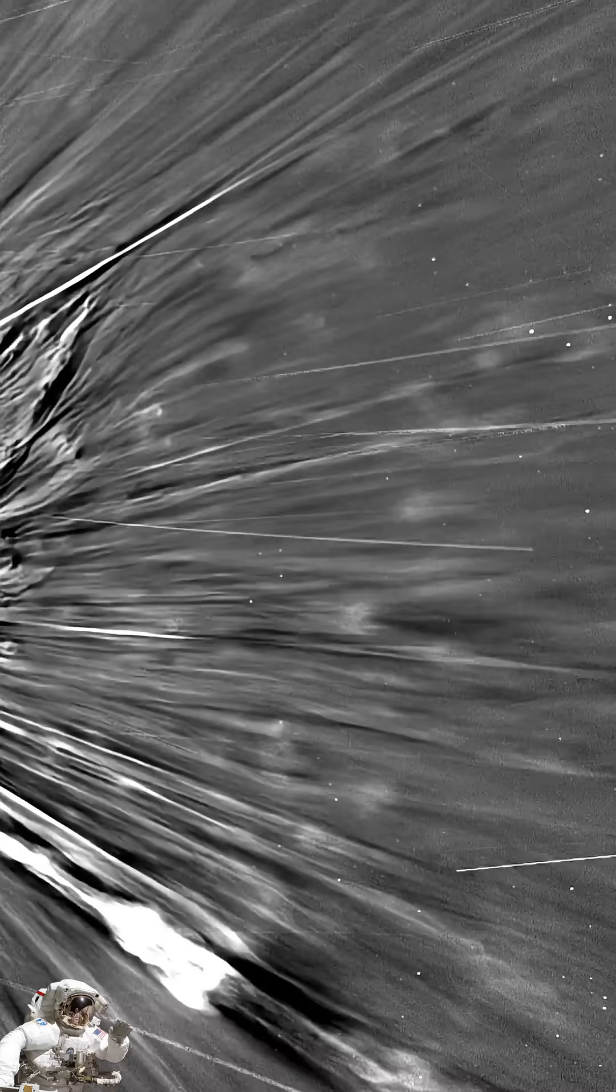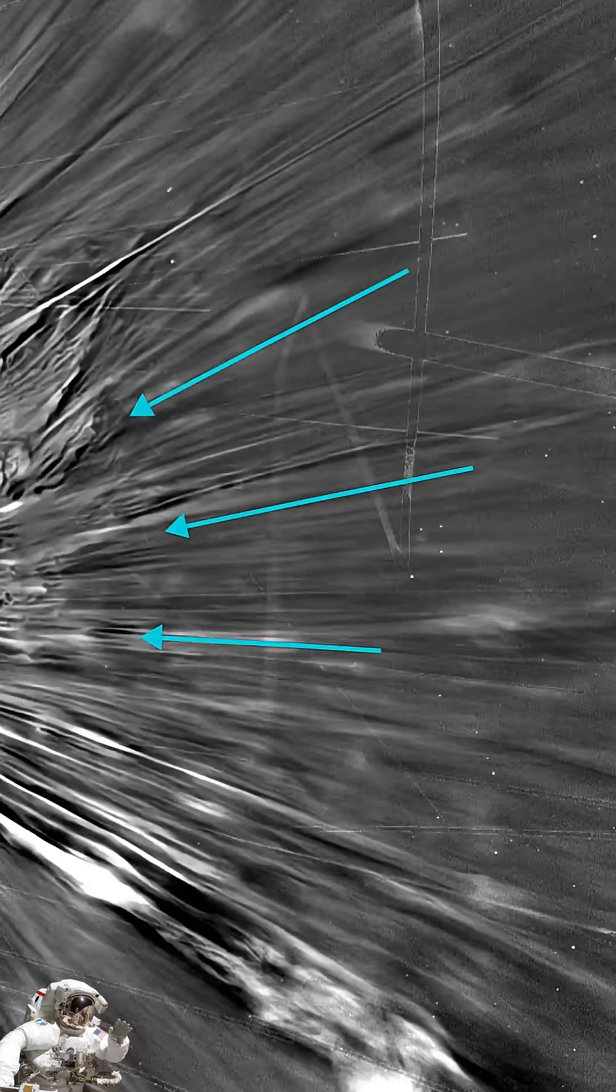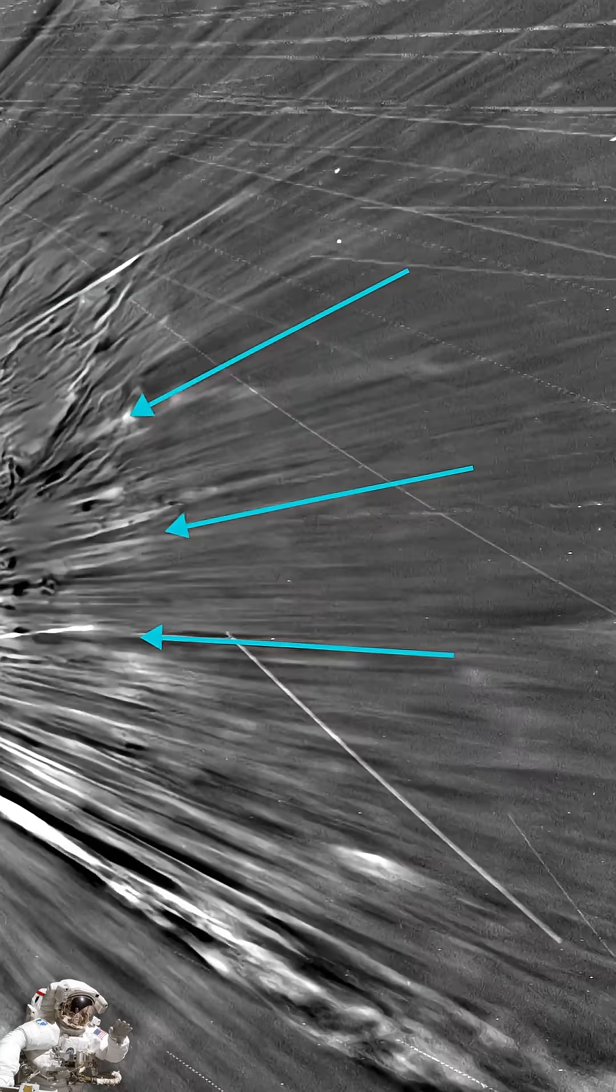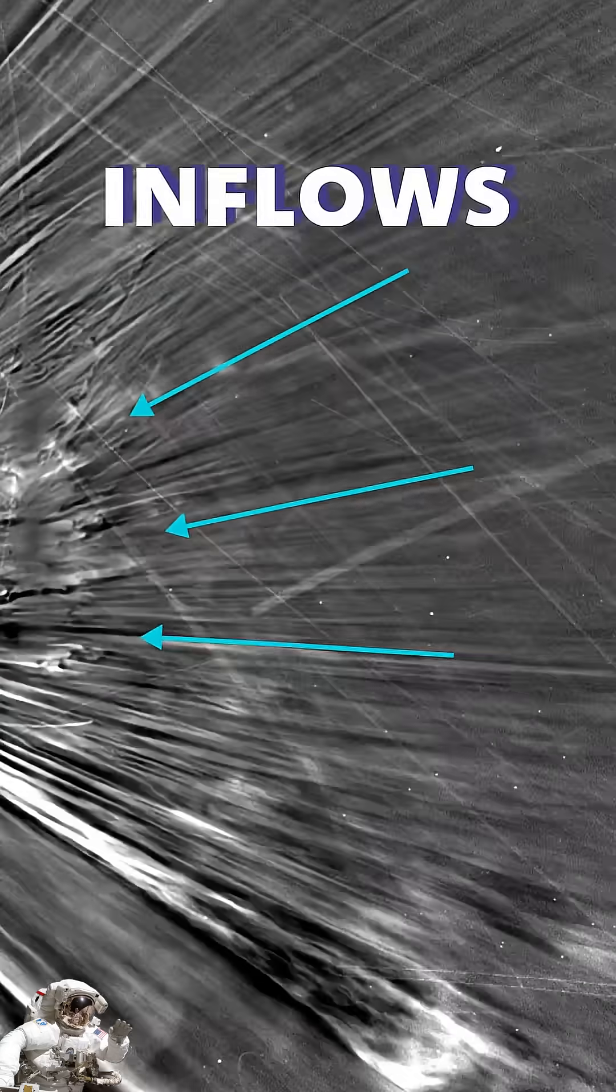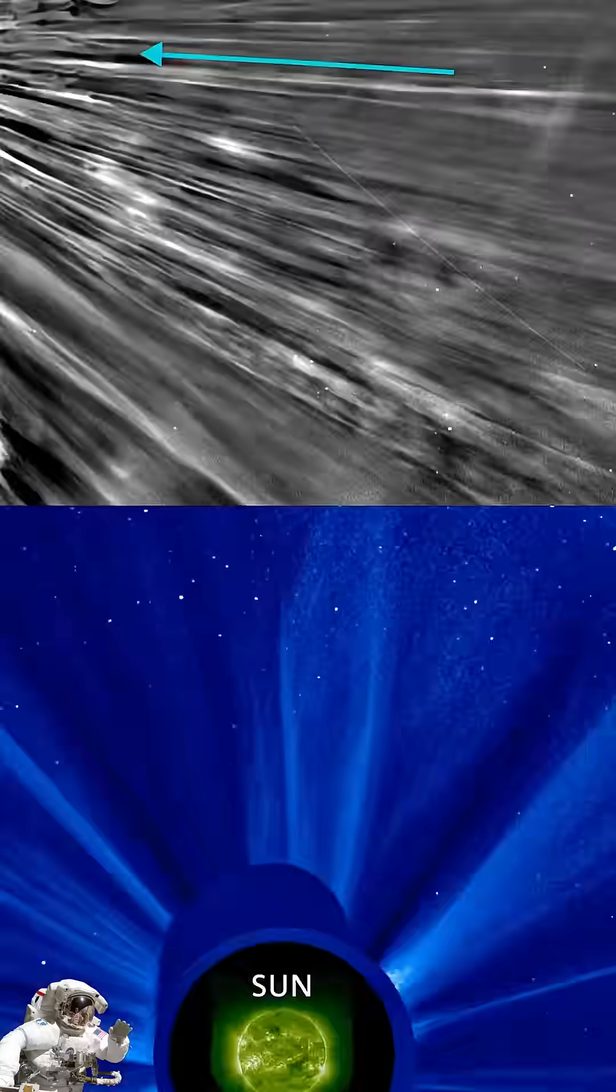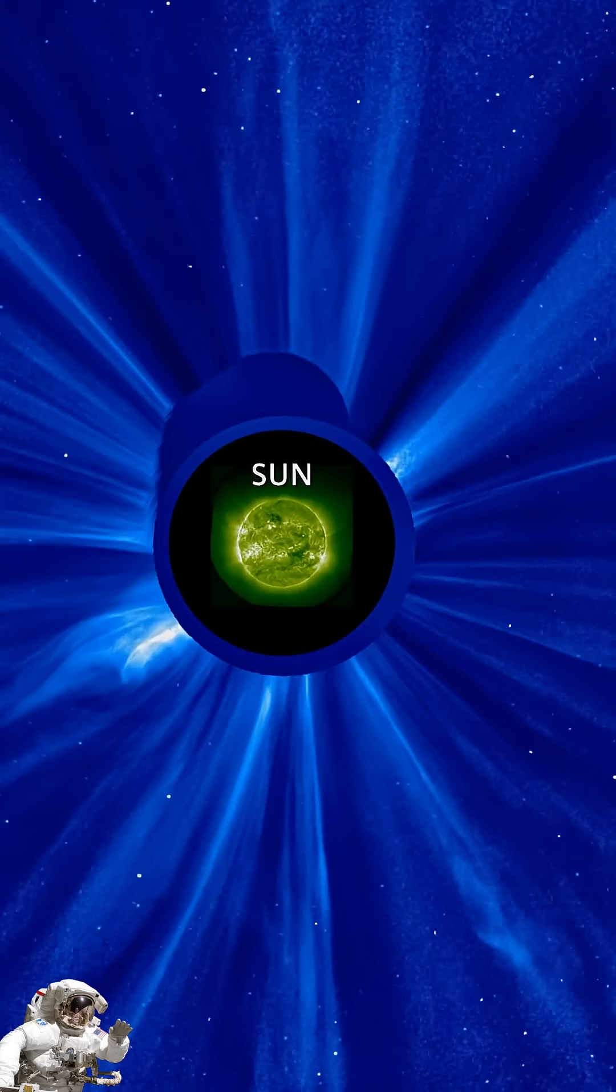But if we zoom in, we can see some solar material returning back to the sun. These unusual features are known as inflows. Previously, scientists had only seen hints of this process from a distance.